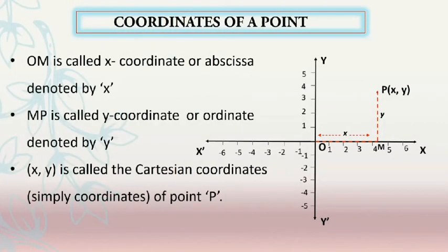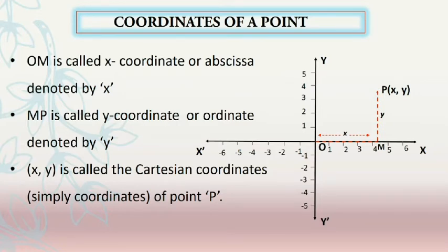Every point in the coordinate plane is represented by an ordered pair of real numbers. Consider a point P. The coordinates of P are represented by the lengths OM and MP. The length OM is called the X-coordinate or abscissa, and the length MP is called the Y-coordinate or ordinate. The ordered pair (X, Y) is called the Cartesian coordinates, or simply the coordinates of point P.